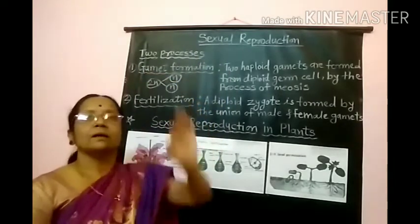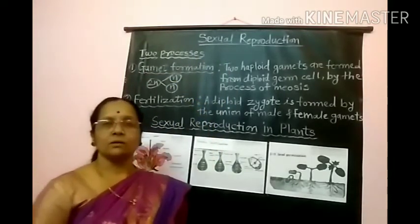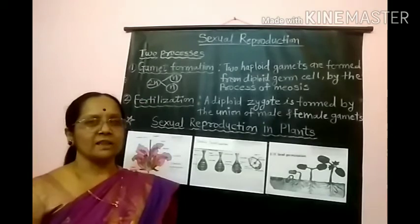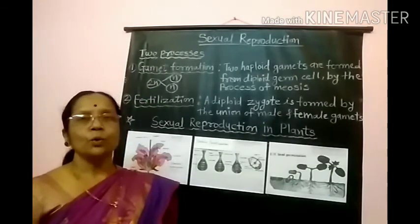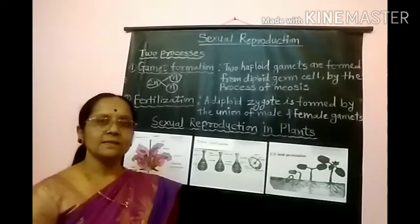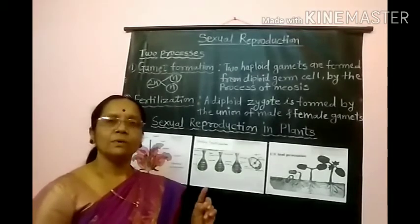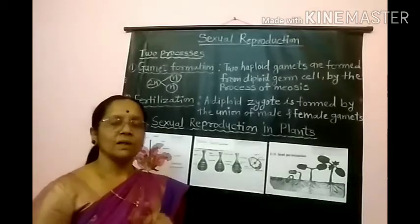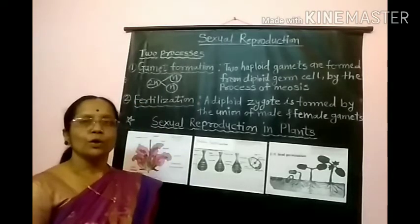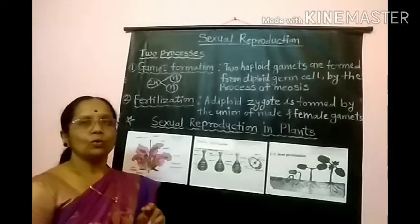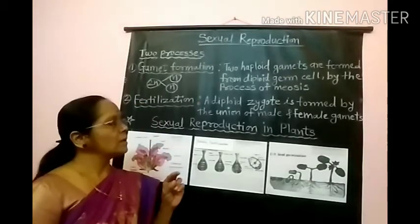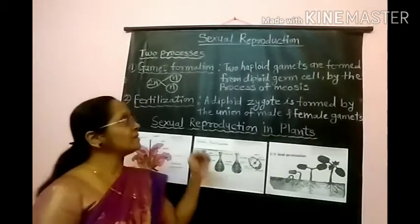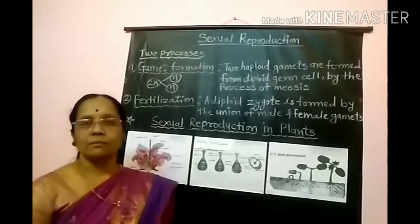Sexual reproduction always occurs with two germ cells — one from the male and one from the female. This means two parents are involved in this reproduction.